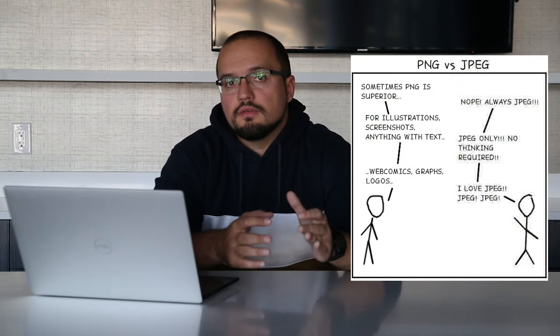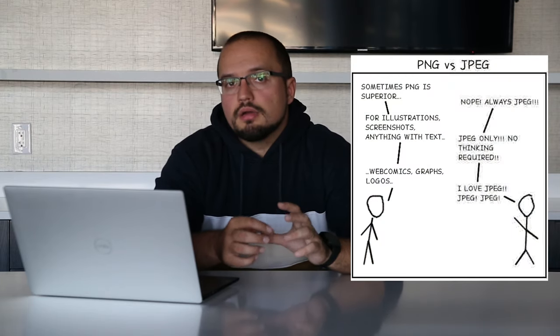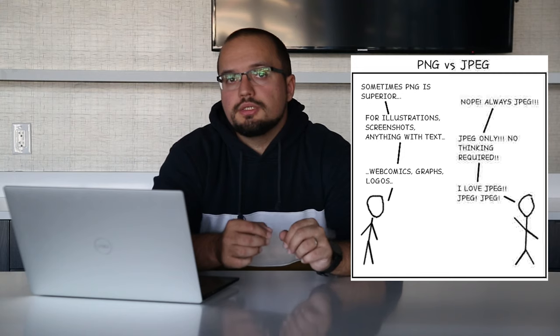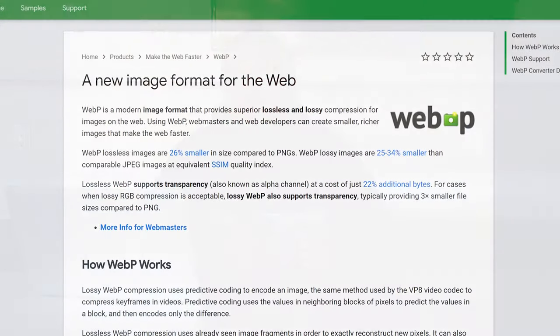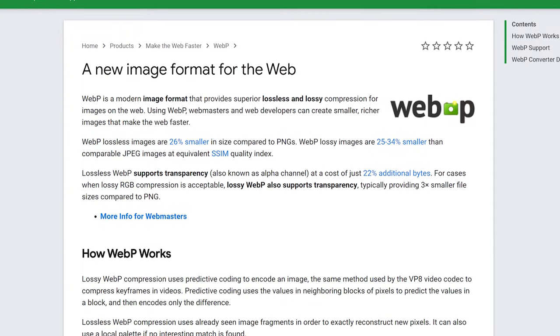Another thing to keep in mind is the file format you pick for your images. Most of the time you should go for JPEG if you're uploading photos. But if the image has a lot of text, lines, drawings, icons, or graphics, it's a good idea to use PNG because the result will be much better than JPEG. An advanced file format would be WebP, which Google designed specifically for web needs, but you need to keep in mind that not all browsers support this technology, so you'll have to keep JPEG or PNG as a backup.